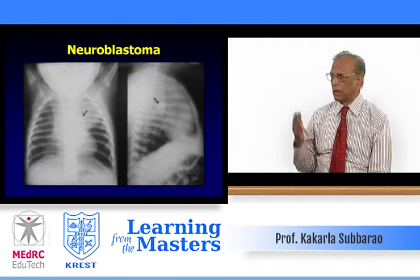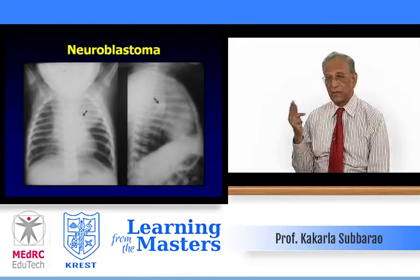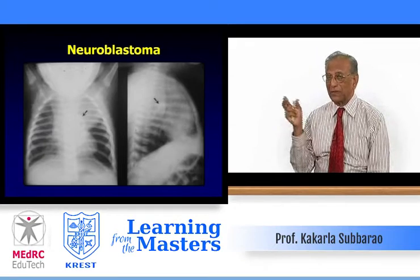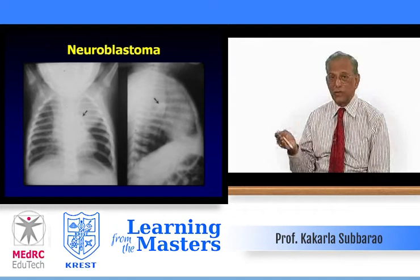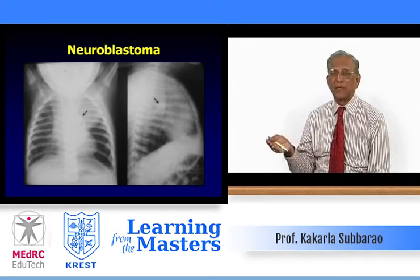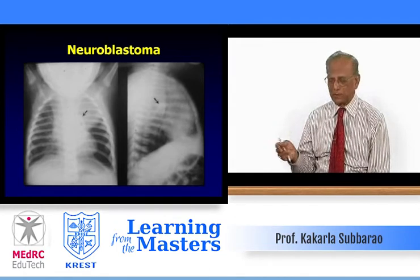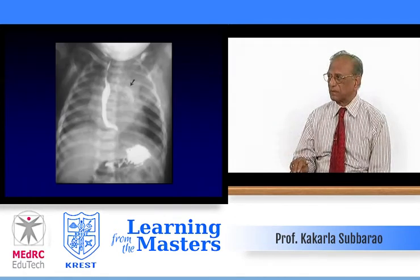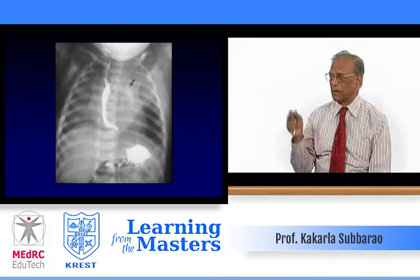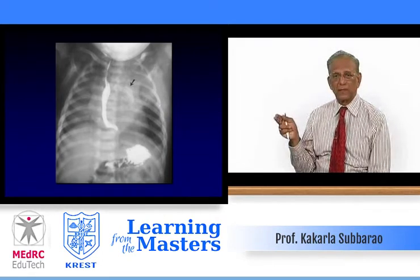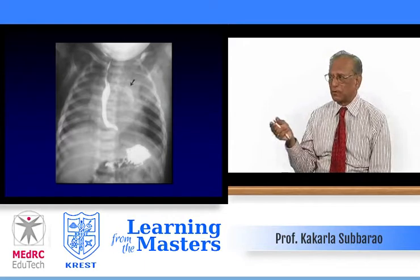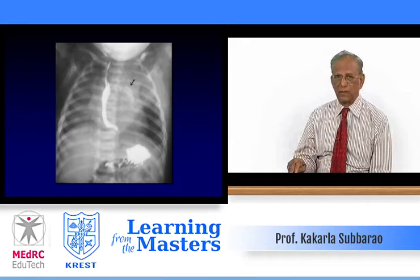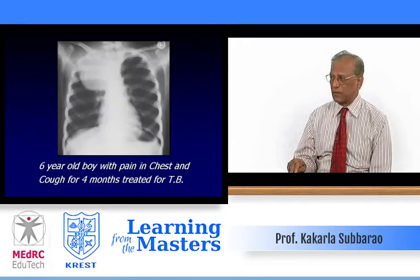Neuroblastoma: I showed you earlier a similar mass in the anterior mediastinum with calcification; here it is in the posterior mediastinum with calcification — neuroblastoma. Another example shows curvilinear calcification in the posterior mediastinum — neuroblastoma deviating the esophagus to the right side.